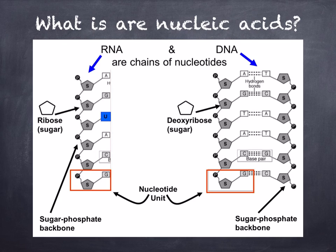Nucleotides are your basic units, as you can see represented by the red highlighted boxes, and they make up a group of the most important chemicals in all organisms. These are the nucleic acids — DNA, as you can see on the right, and RNA on the left. RNA is a single chain of nucleotides joined together, whilst DNA is two chains joined together, so DNA is a double helix.